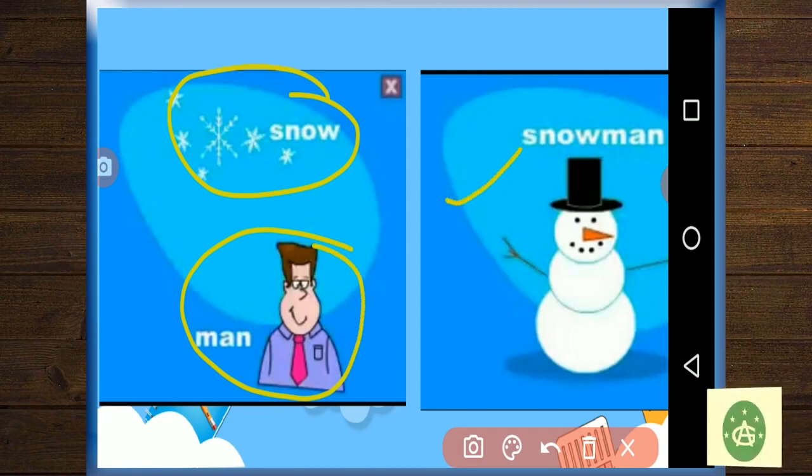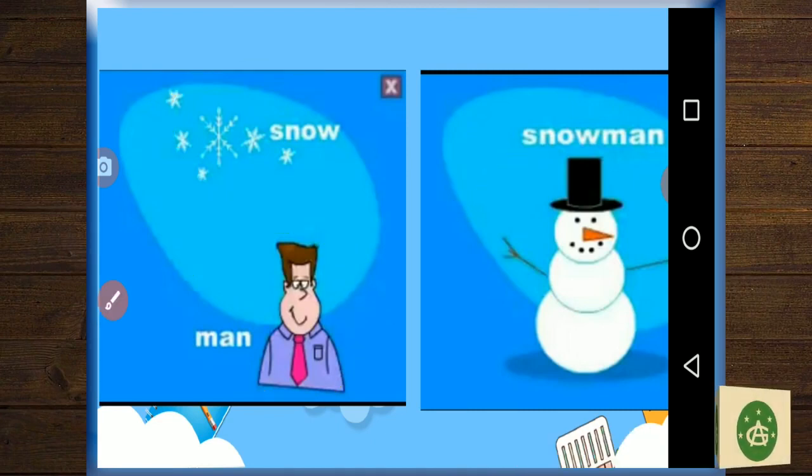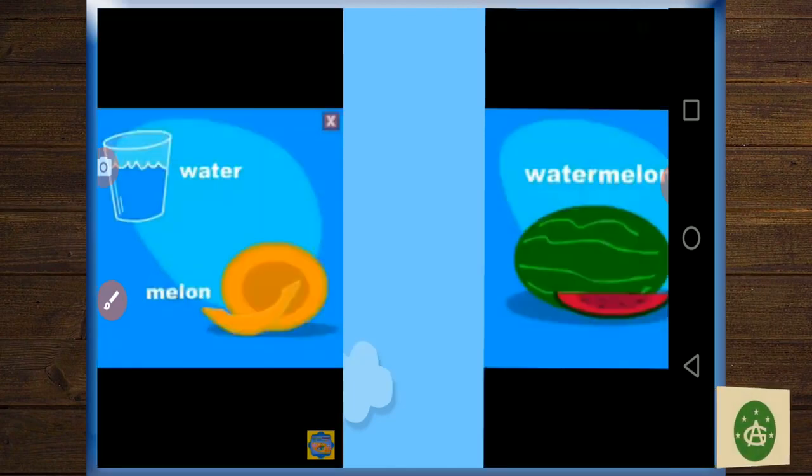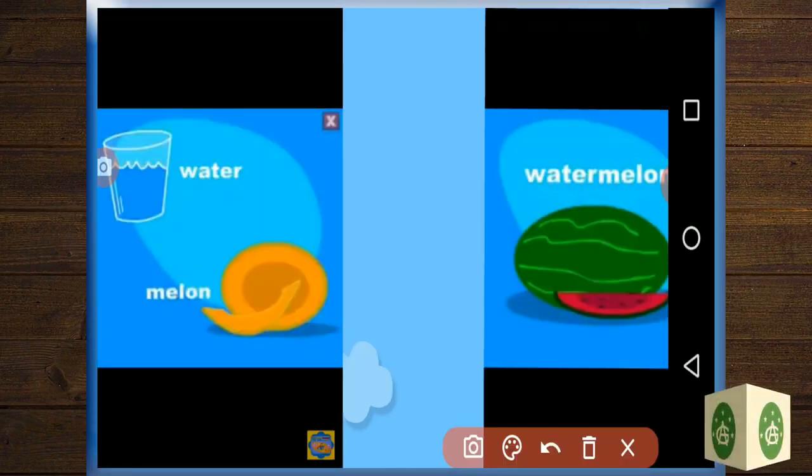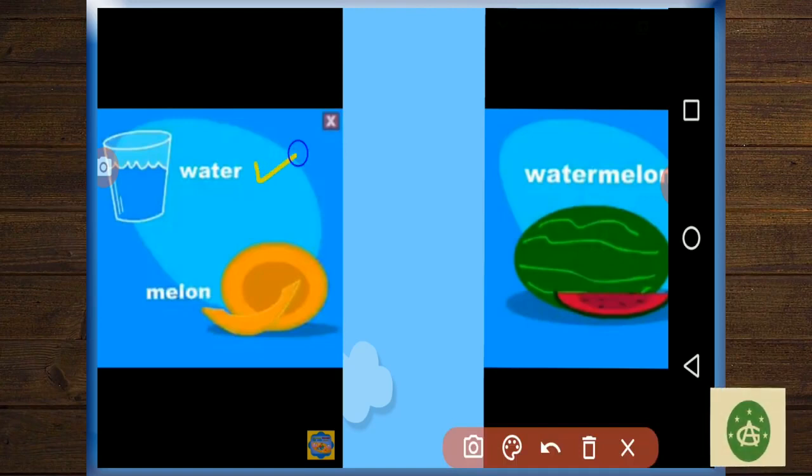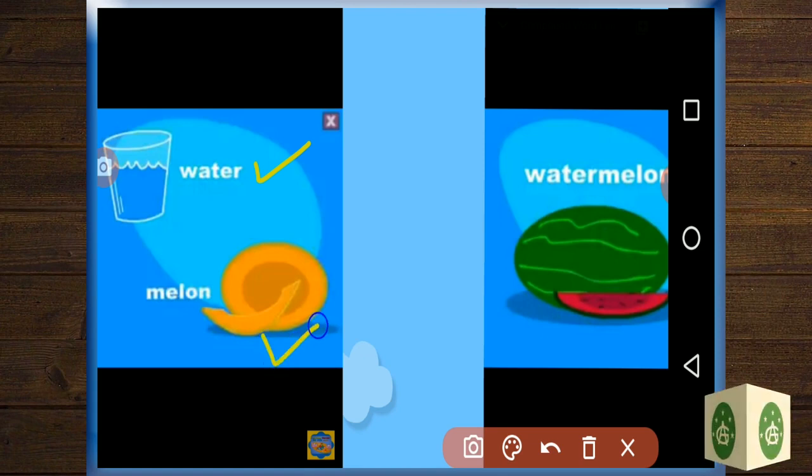Some more examples are there on the screen now. Can we see tea and a pot? It can be any pot, but when we join it together we get a teapot where we can keep the tea, okay, from which we can pour it out in our cups.